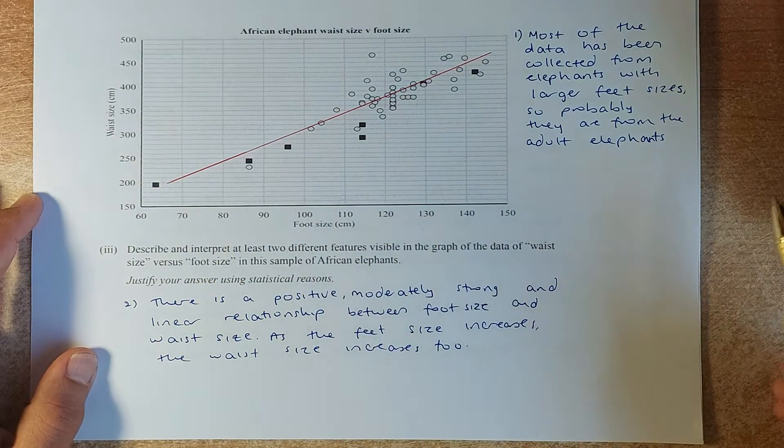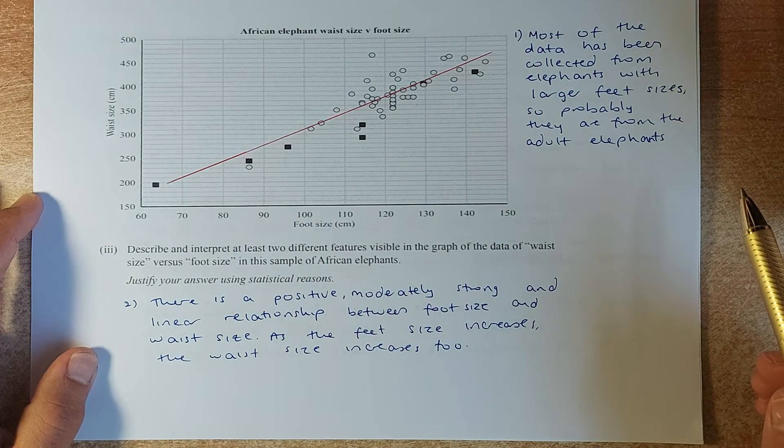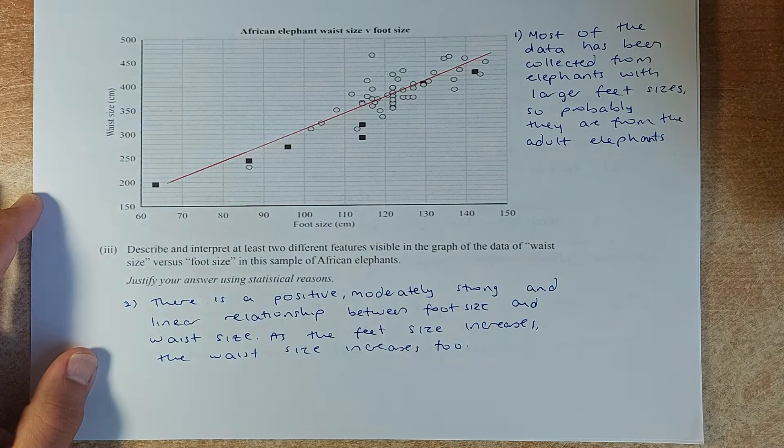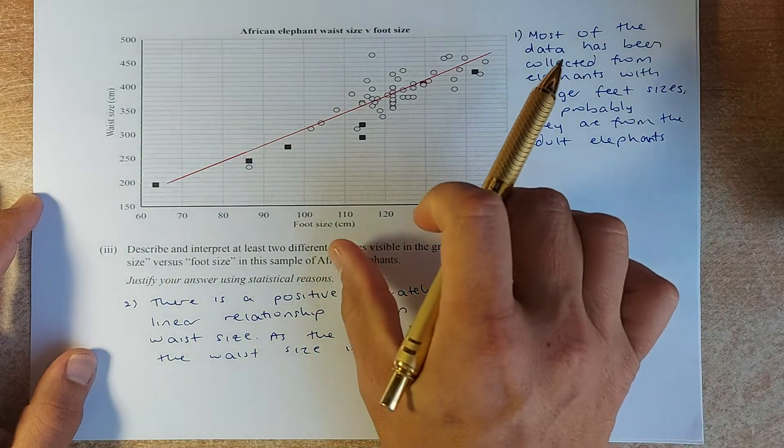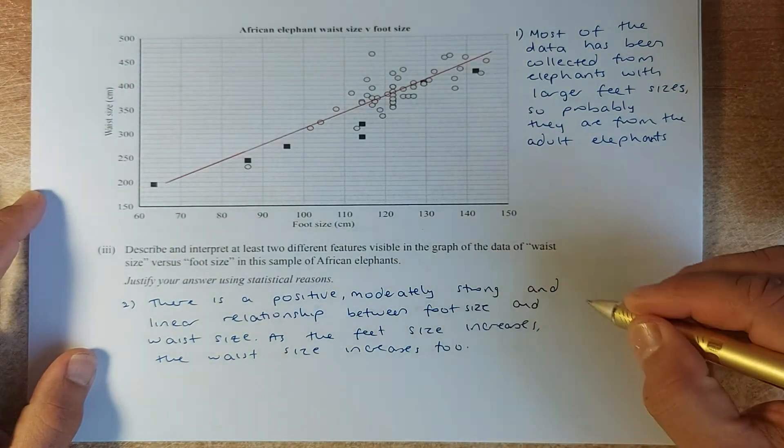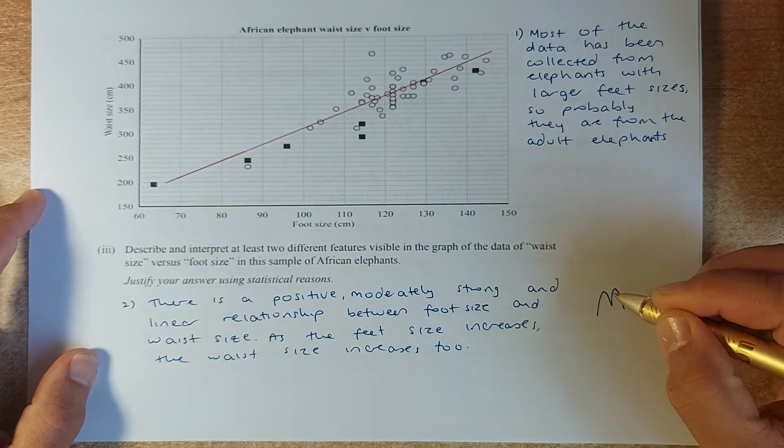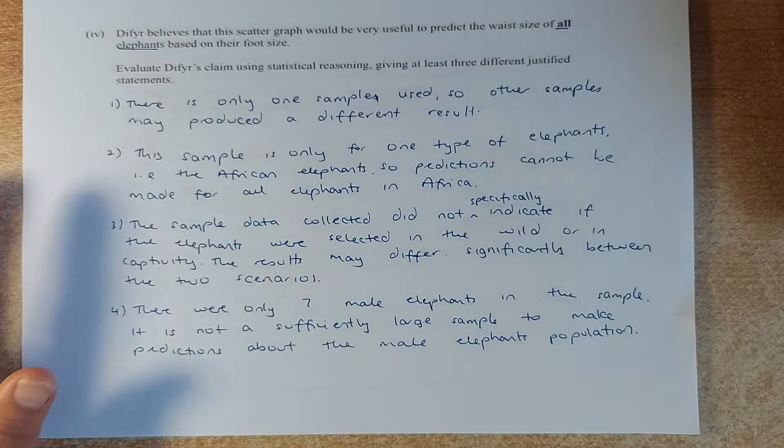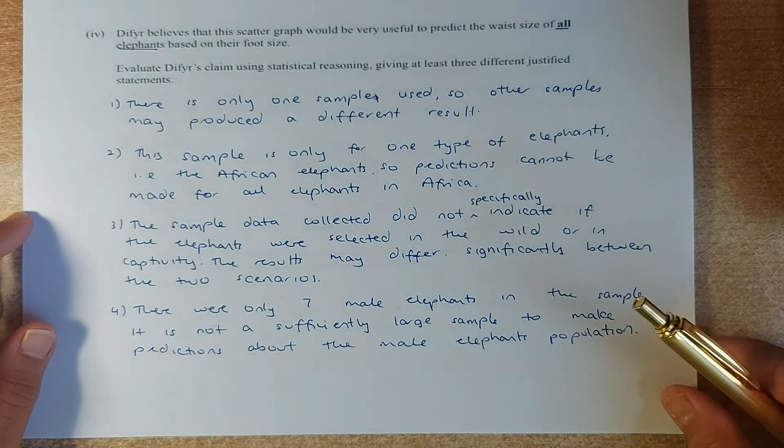The next one, there is a positive linear relationship between the foot size and the waist size. So as the foot size increases, as it gets bigger, the waist size also increases. So that is how you answer. If you can answer two of them, you will get a merit. If you answer only one, you get an achieve. Not too bad, right?